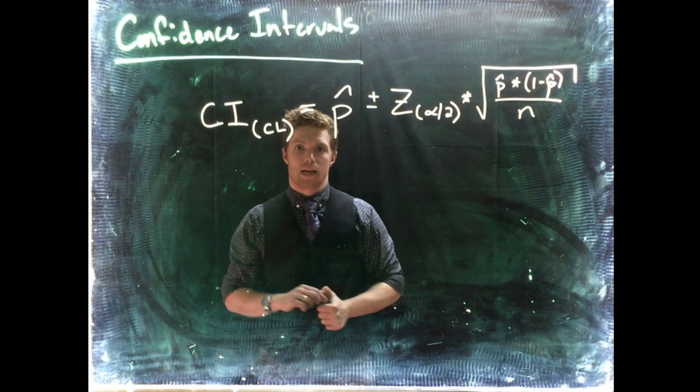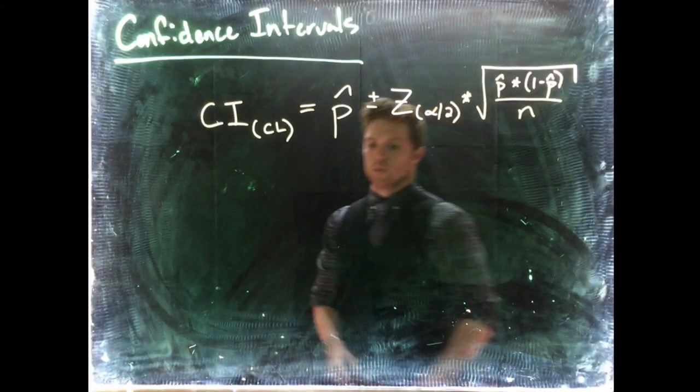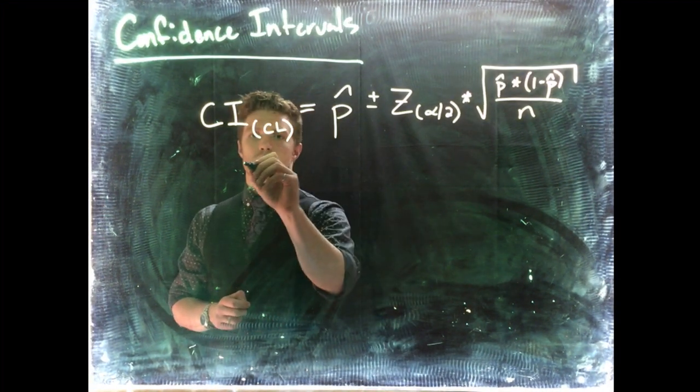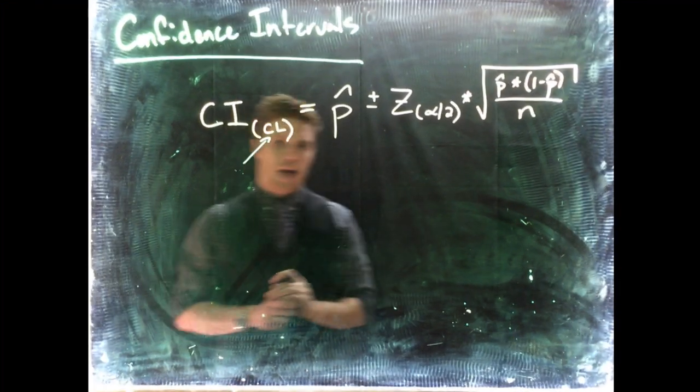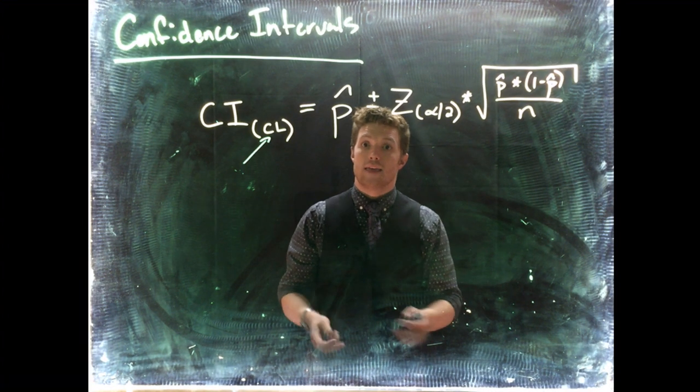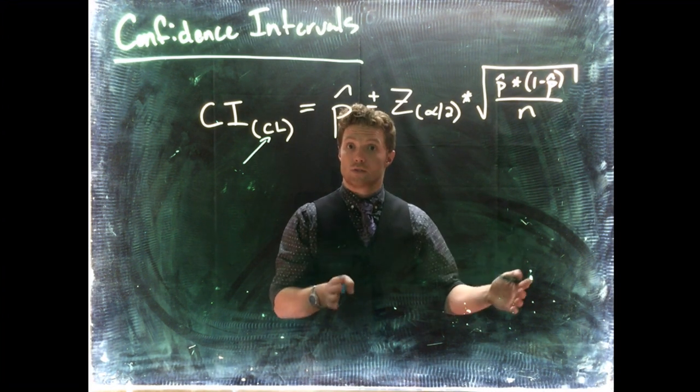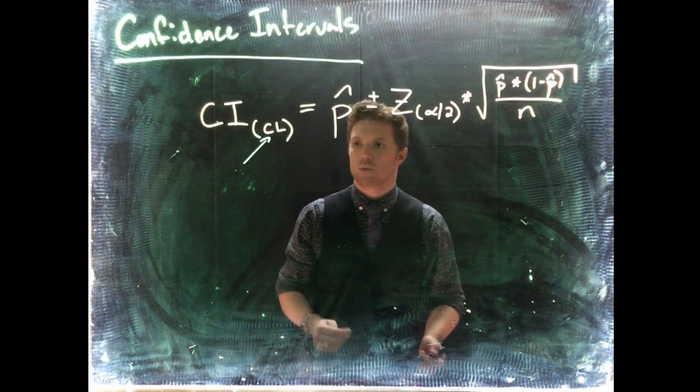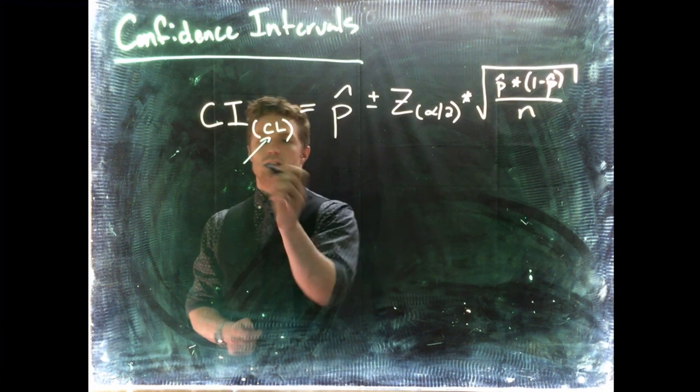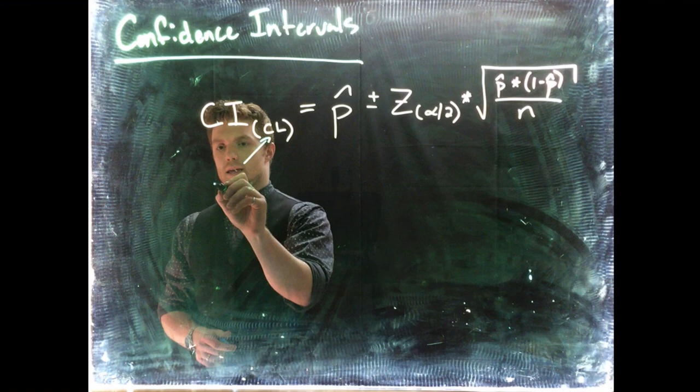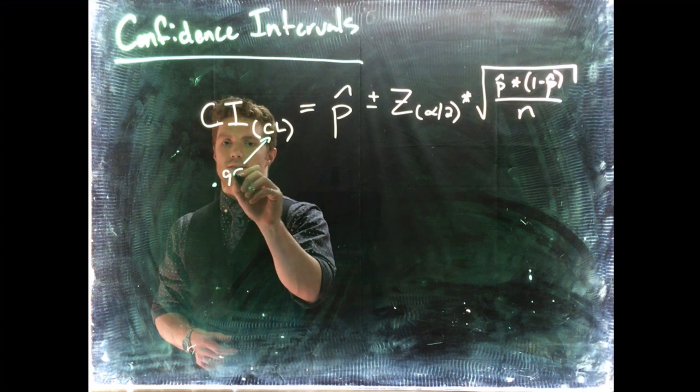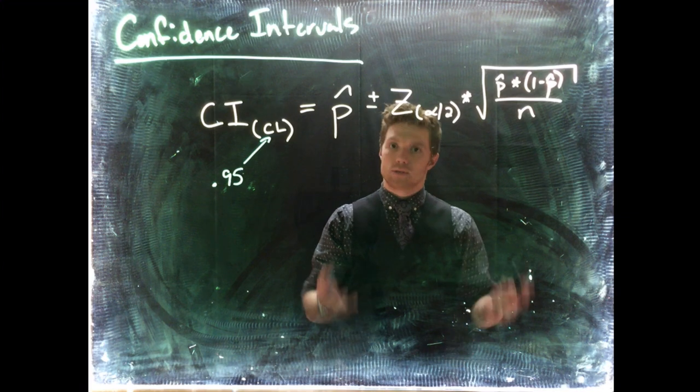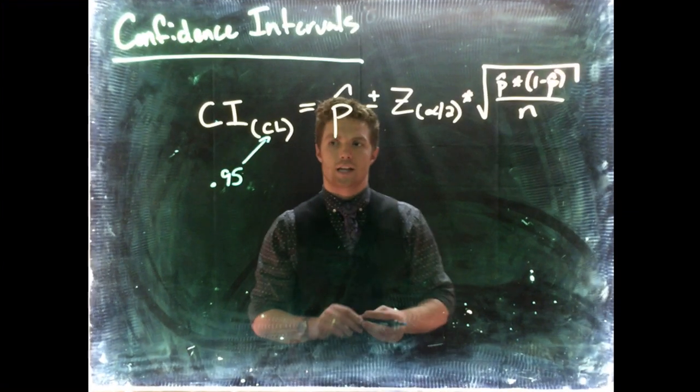Alright, so this is our baseline equation. So let's review again what some of these variables are. The confidence level is like how confident do we want to be that our confidence interval has captured the true population, in this case proportion. A lot of times this is set as like 0.95, where we want to be 95% confident, sometimes we want to be 99% confident, really just depends on your scenario.